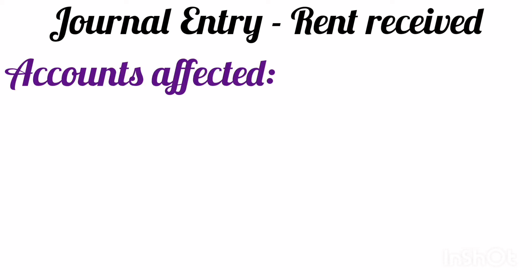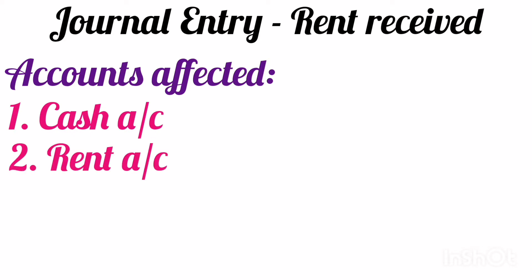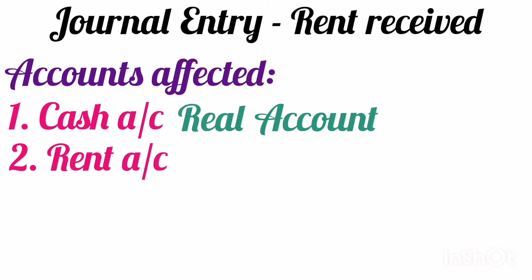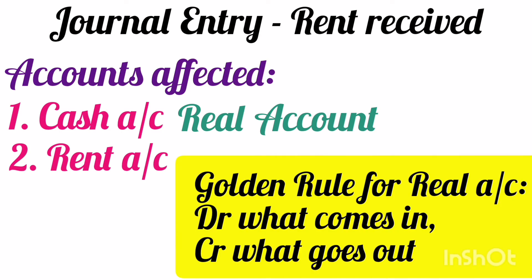The journal entry which we are discussing is rent received. Assuming that the rent is received in cash, the two accounts that are affected are cash account and rent account. Cash account is a real account. The golden rule for real account says debit what comes in, credit what goes out. When we receive rent, the cash comes into the business. Hence, cash account will be debited.